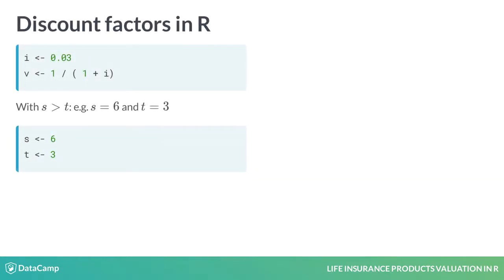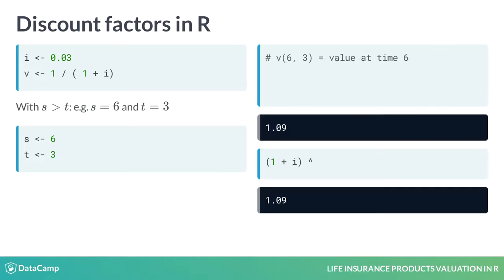In the second example, set s to 6 and t to 3. Then v(6,3) tells you how 1 euro at time 3 grows to 1.09 euro at time 6.